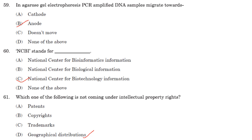In agarose gel electrophoresis, PCR amplified DNA samples migrate towards the anode. The phosphate backbone of the DNA molecule is negatively charged, so when placed in an electric field, DNA fragments migrate to the anode, which is positively charged. Answer is option B.